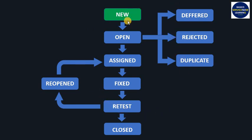For example, if a software tester logs a bug or creates a new bug, that particular bug moves to an Open status. Then the software development team lead decides whom to assign that bug to for fixing.